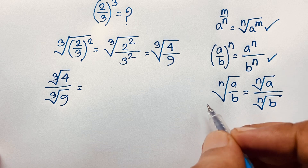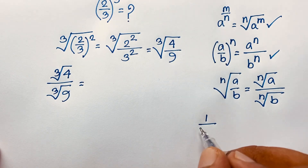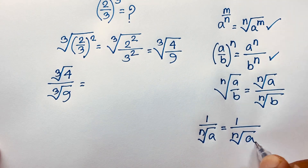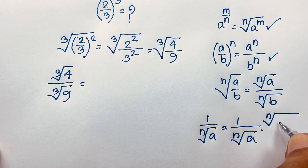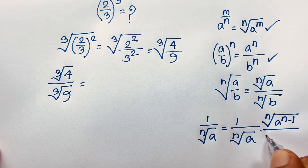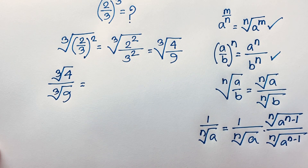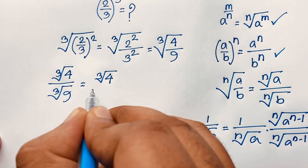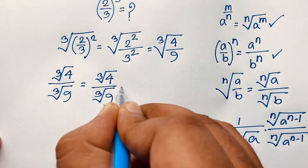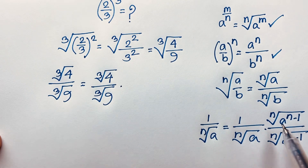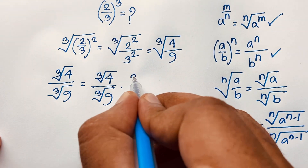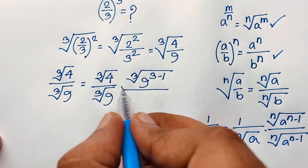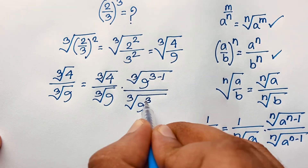Now, I apply the rationalization formula: 1 over the n-th root of a equals 1 over the n-th root of a, multiplied by the n-th root of a to the power n minus 1, over the n-th root of a to the power n minus 1. Applying this here, we get cube root 4, times cube root of 9 to the power 3 minus 1, in both numerator and denominator.